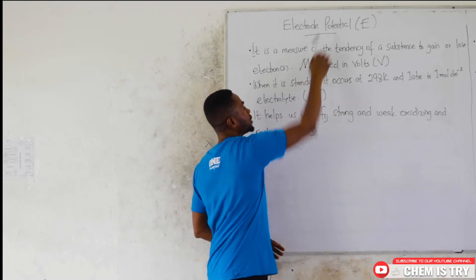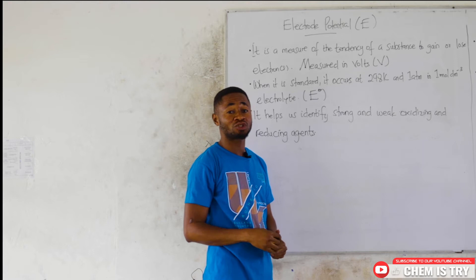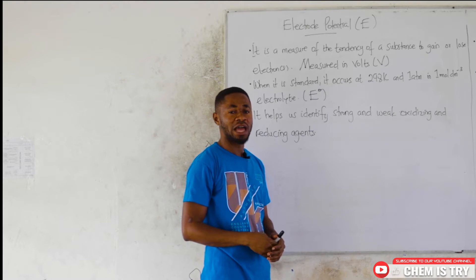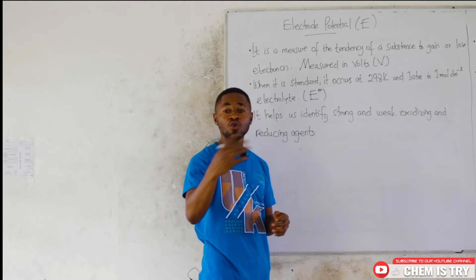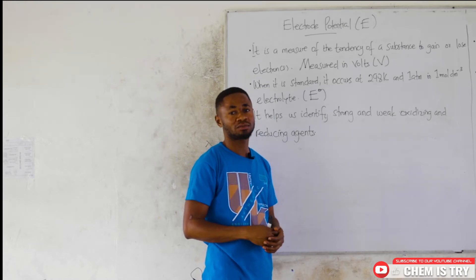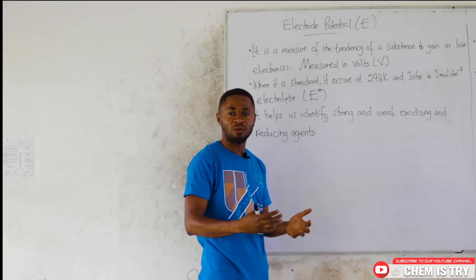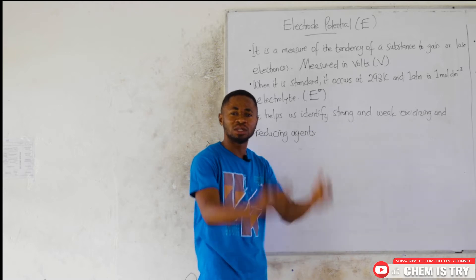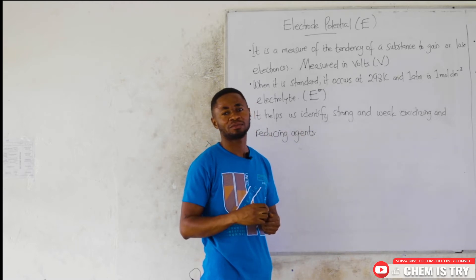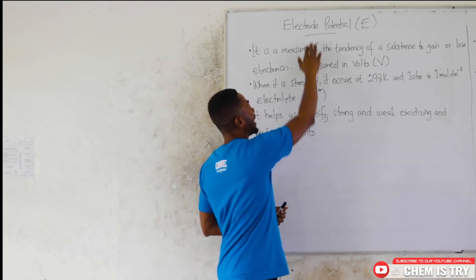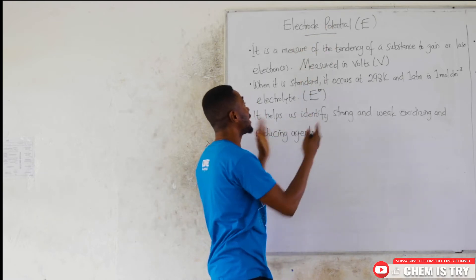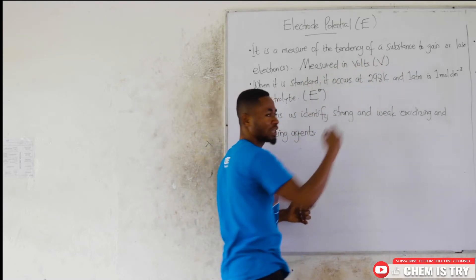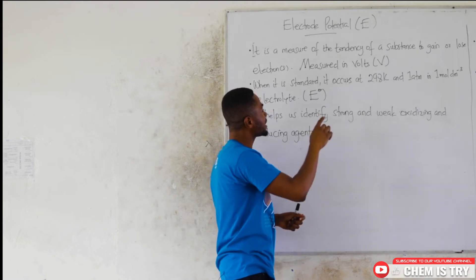Today we are talking about electrode potential. Electrode potential is represented by the letter E. We all know substances, as we've talked about in redox equations, lose or gain electrons. How easy it is for one substance to lose electrons or how easy it is for a substance to gain electrons is measured by what we call the electrode potential. Electrode potential is a measure of the tendency of a substance to gain or to lose electrons. It is measured in volts.